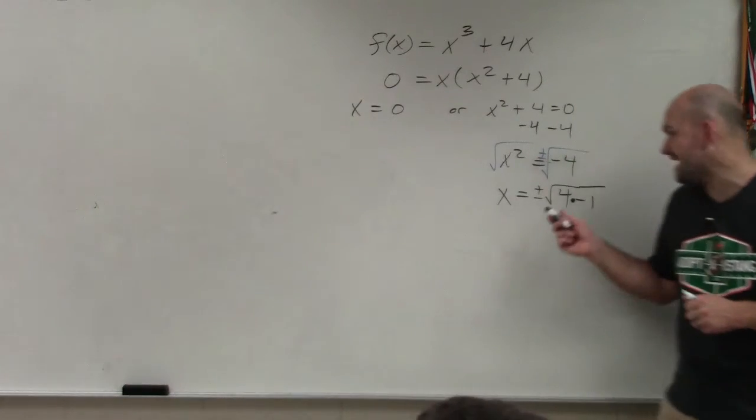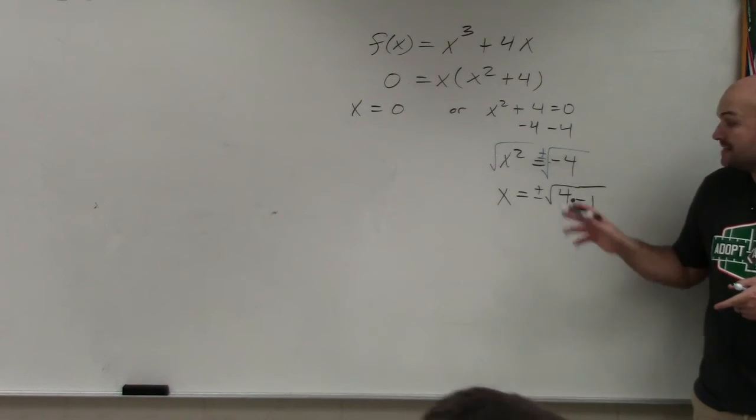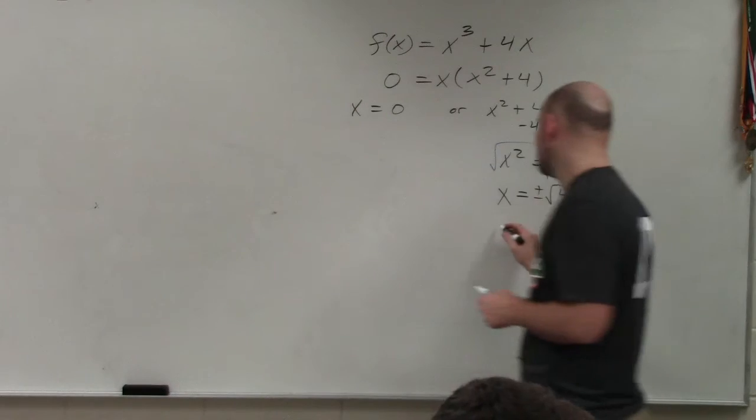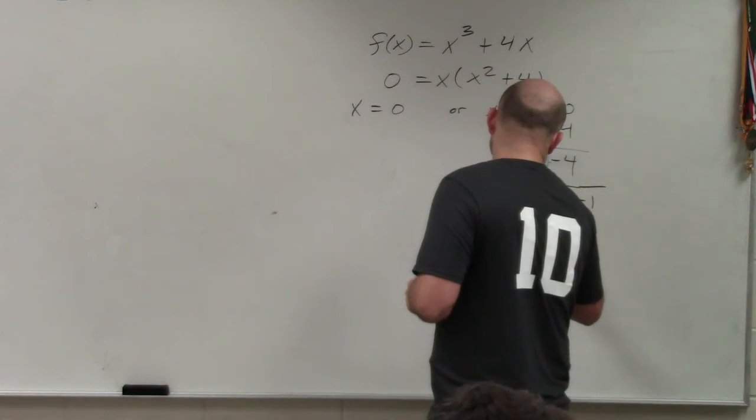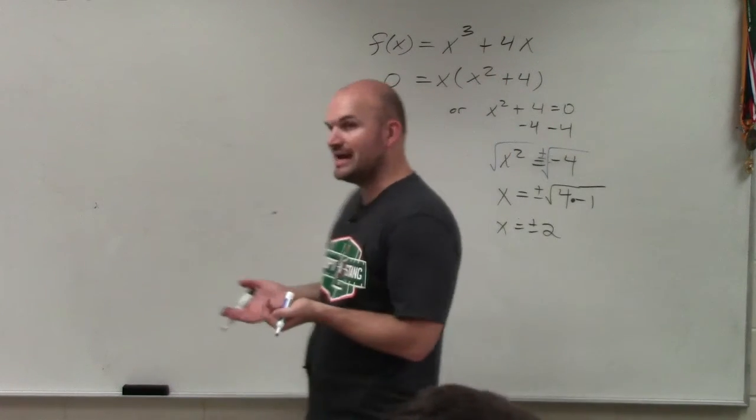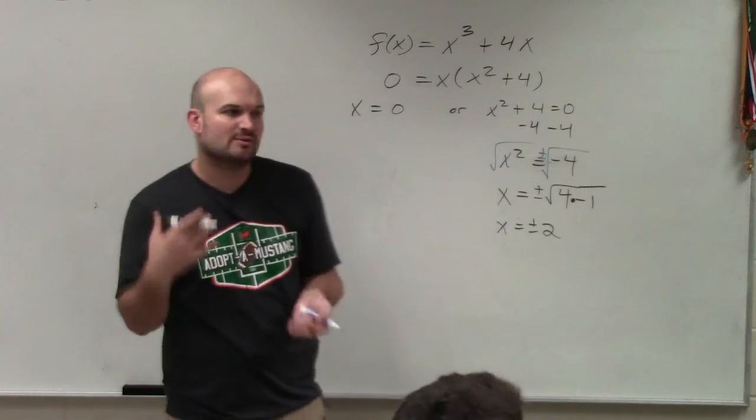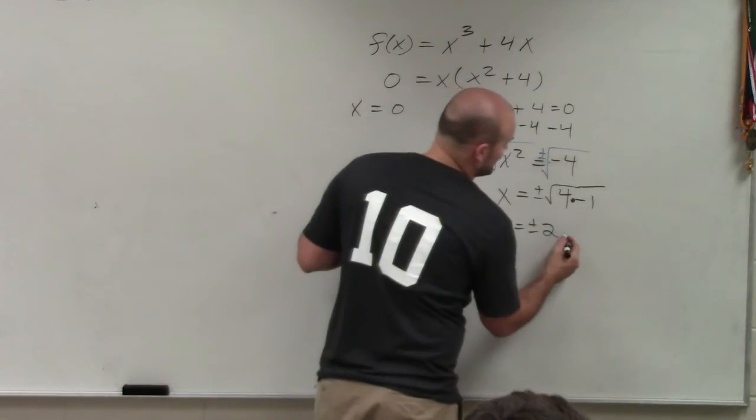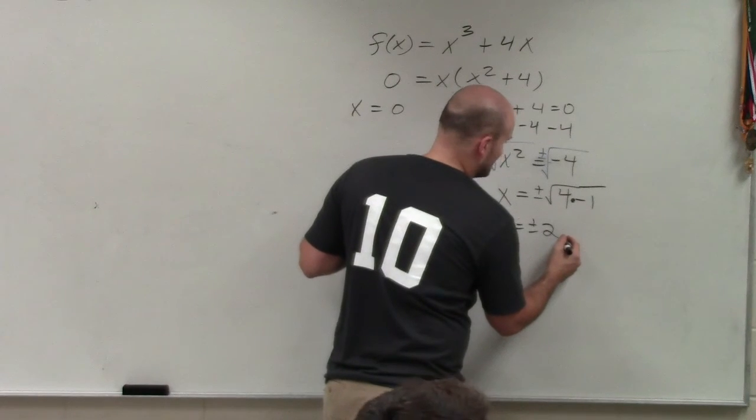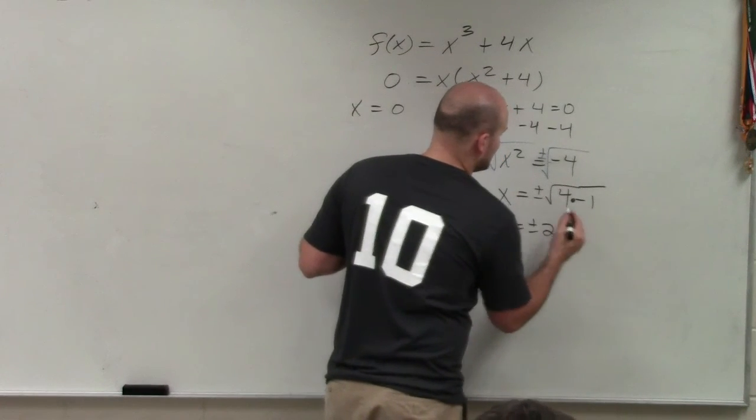So what we do is we factor out the negative 1. So we rewrite it as 4 times negative 1. Now, we know what the square root of 4 is. That is going to be 2. However, square root of negative 1, we don't have anything in the real number system for the square root of negative 1. So we come up with the imaginary number or the complex number system, which is going to be i.